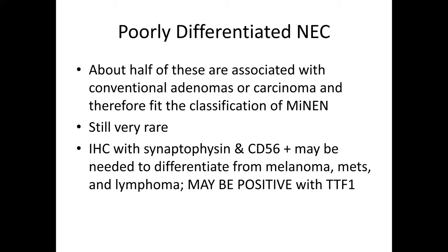The poorly differentiated neuroendocrine carcinomas are more commonly associated with conventional adenomas or carcinoma, and therefore often fit into the mixed category of neuroendocrine and non-neuroendocrine tumors. These are very rare, but you should keep them in mind. Especially if you're considering melanoma or metastatic disease, these can be challenging immunohistochemically because you can get variable, seemingly aberrant markers like TTF1 and so forth.